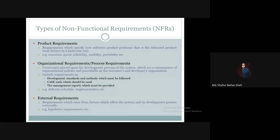Organizational requirements are constraints placed upon the development process of the system, which are a consequence of the organizational policies and procedures in the customer's and developer's organization. The software system is developed by the development process, and these are called organizational requirements or process requirements.